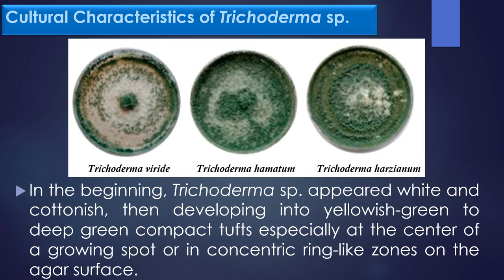Cultural characteristics of Trichoderma species: This image shows the colony morphology of Trichoderma species, Trichoderma viride, and Trichoderma hazianum on SDA (Sabouraud Dextrose Agar). In the beginning, Trichoderma strains appeared white and cottony. Then, it developed into yellowish-green to deep-green compact tufts, especially at the center of the growing spot or in concentric ring-like zones on the agar surface.